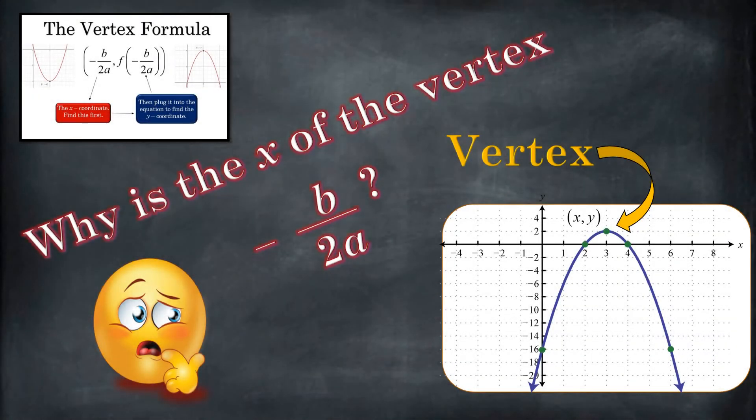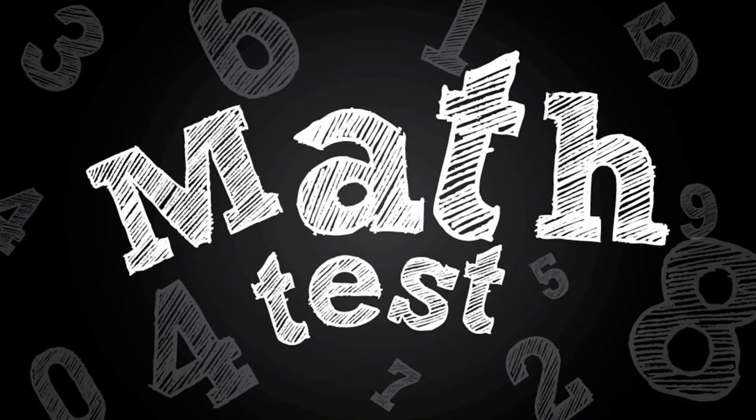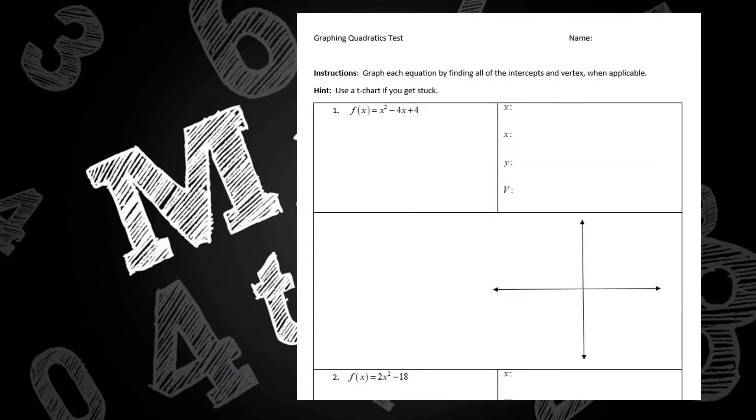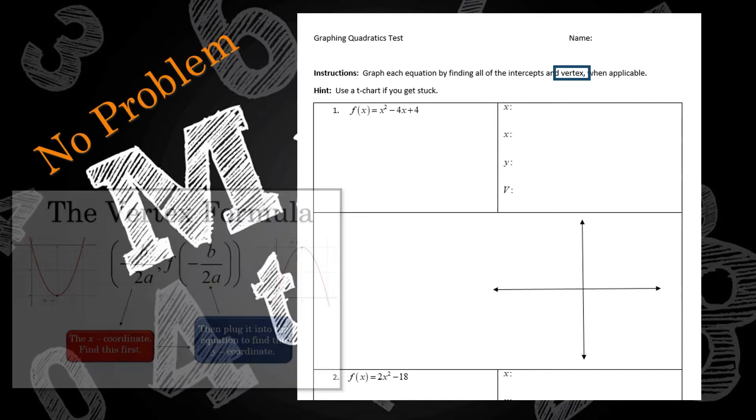Hey, have you ever wondered why the x-coordinate of the vertex is negative b over 2a? Say you're taking a test and you have to figure out, for a quadratic equation, you have to find all the intercepts and the vertex. You're like, hey, this is no problem. You got this formula right here, right?